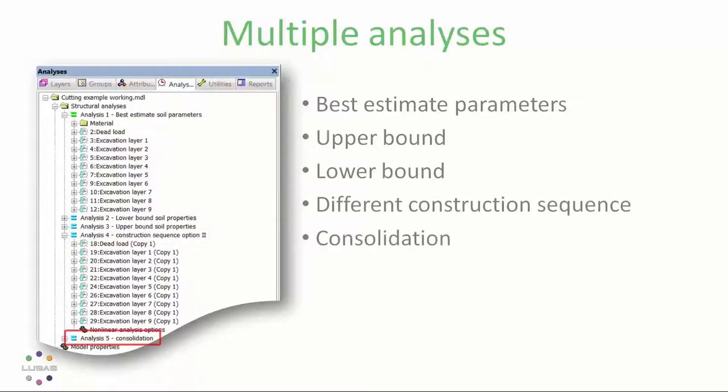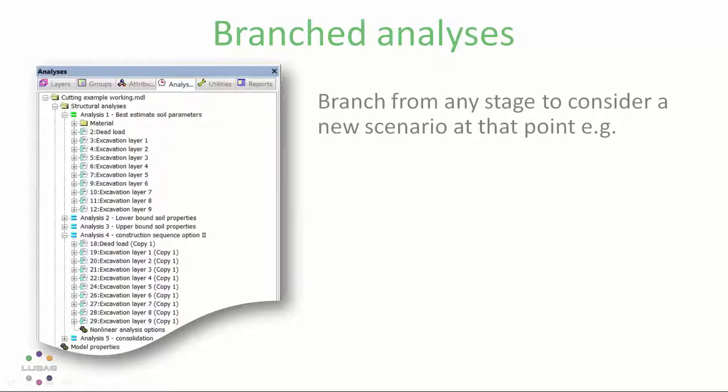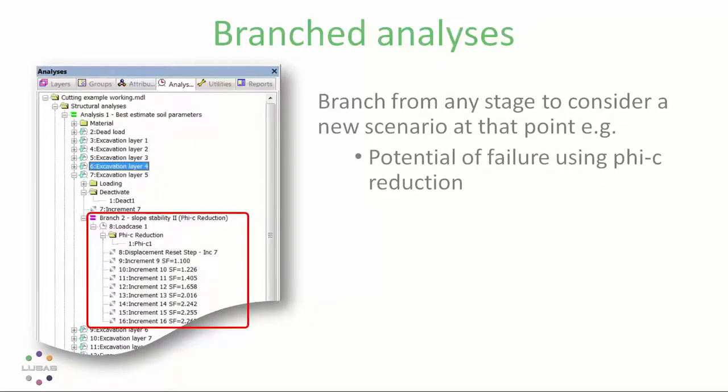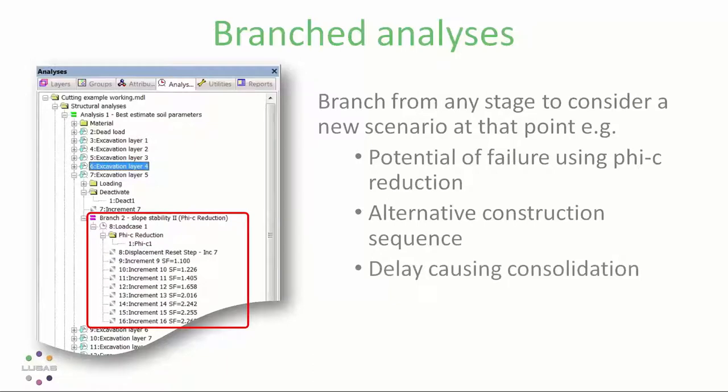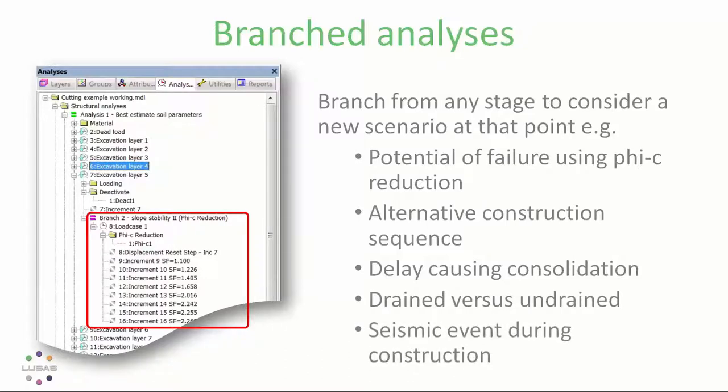So taking into consideration the different assumptions appropriate for each such that the different material properties or support conditions will have the ability to then insert. But we also have the ability in the branch analysis to insert branches from any stage in any construction sequence. So that could be the Phi C reduction branch. And this approach allows us to check for things like alternative construction sequence, maybe a different ending with the same beginning or consolidation at a particular stage, or that staged drained rather than undrained, or maybe a transient dynamic analysis branch such as a seismic event affecting the model part way through the sequence or at the end of the sequence, with all the prior stress state inherited.